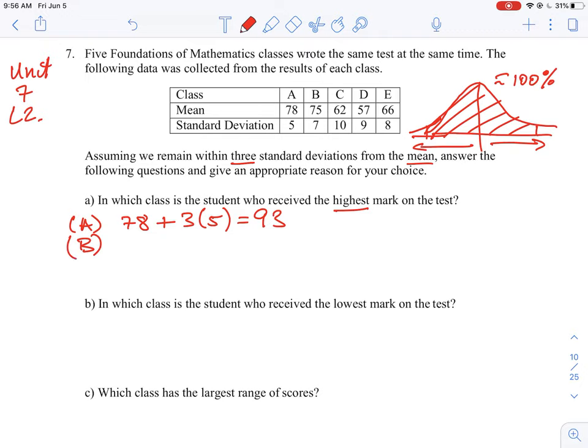Then we do the same for class B. We're going to take 75 and multiply it by three times 7, and then we're going to get 96. So the highest possible mark here is 96. So what you're going to want to do is you're going to need to test all the classes here and calculate what is the maximum value at three standard deviations, and the highest value there will tell you which class would have received the highest mark.